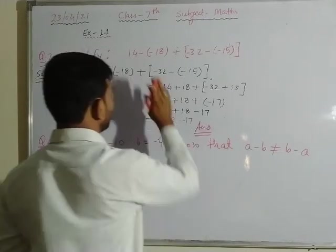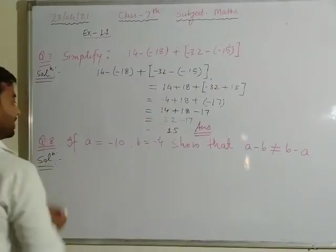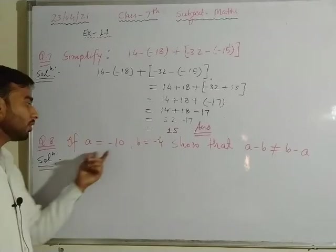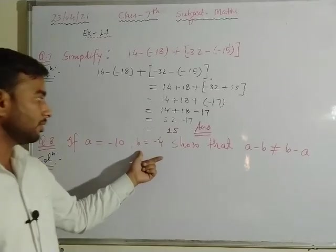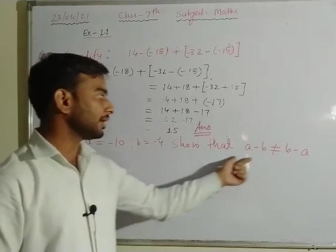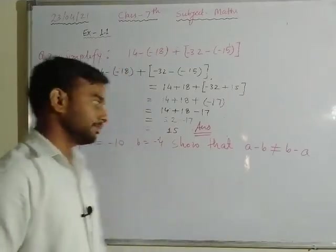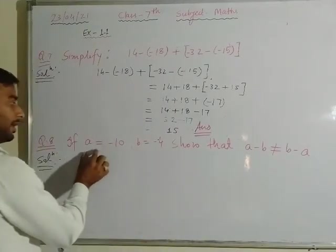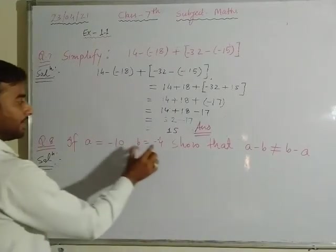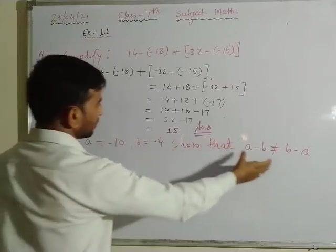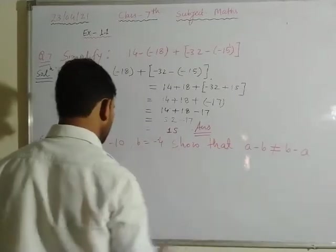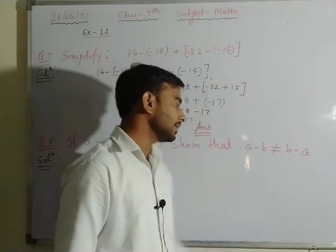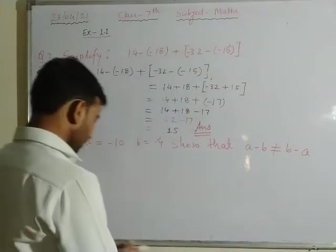Next is question number 8. If a equals minus 10 and b equals minus 4, show that a minus b is not equal to b minus a. What we need to do: given a equals minus 10 and b equals minus 4, show that a minus b is not equal to b minus a, meaning the value of a minus b will not be equal to b minus a.